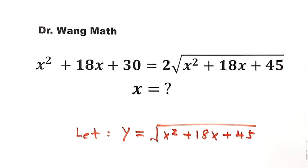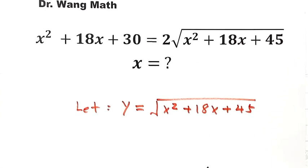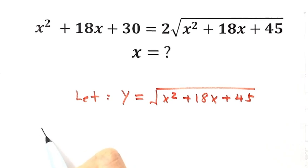Next, let's move this term to the left-hand side. Then x squared plus 18x, then 30 equals 45 minus 15.